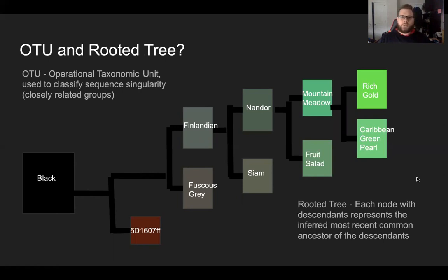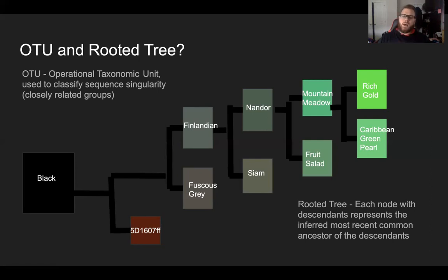OTU and rooted tree: OTU is the operational taxonomic unit, used to classify sequence singularities or closely related groups. As we can see with each vertical split, Rich Gold is to Caribbean while Mountain Meadow is to Fruit, Nander is to Siam, and Finlandian is to Fuscus Gray. A rooted tree represents each descendant's most recent common ancestor. Mountain Meadow would be an example of this, as it is the ancestor of Rich Gold and Caribbean, and Nander is the ancestor of Mountain Meadow and Fruit Salad.